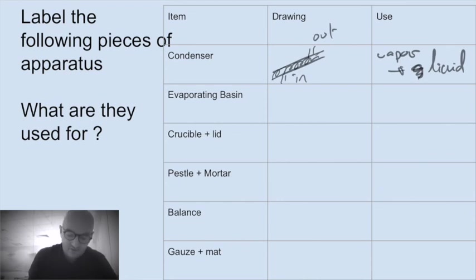Evaporating basin, easy. What we're putting in an evaporating basin? We put the solution. It's to obtain the solute. Evaporate the solution. The solvent comes off, and you're left behind with a solute.